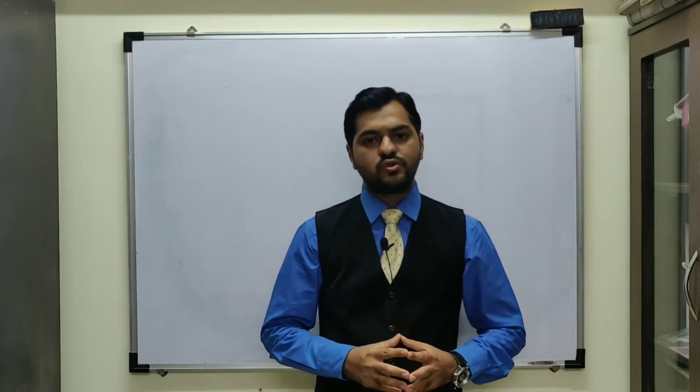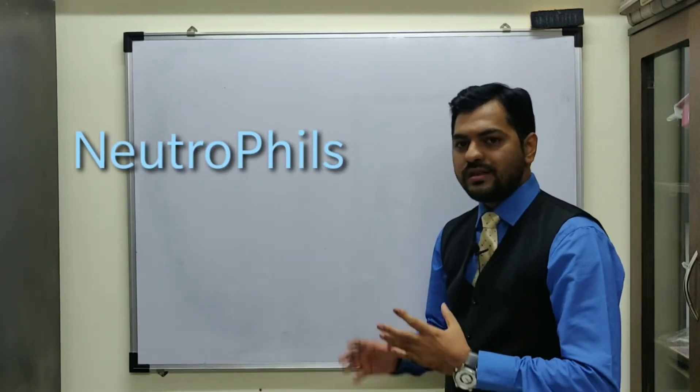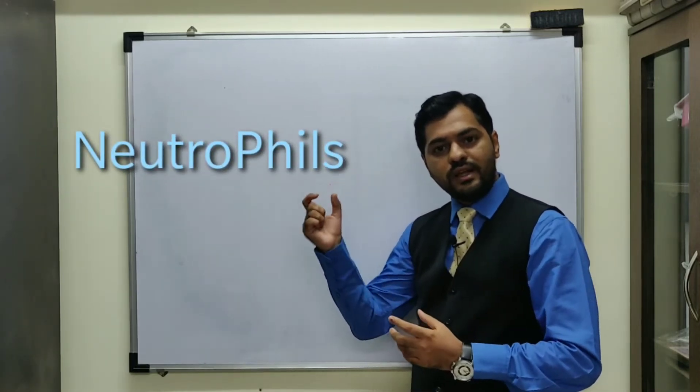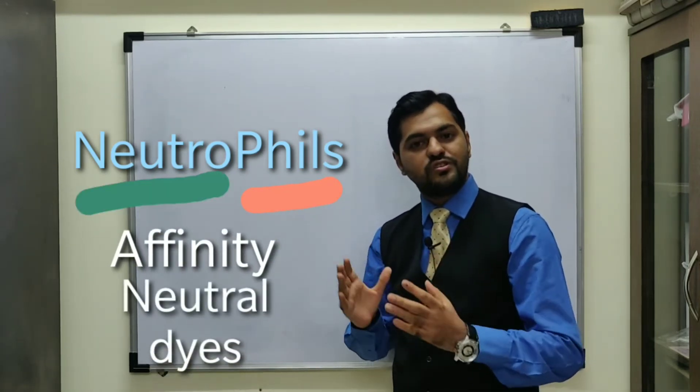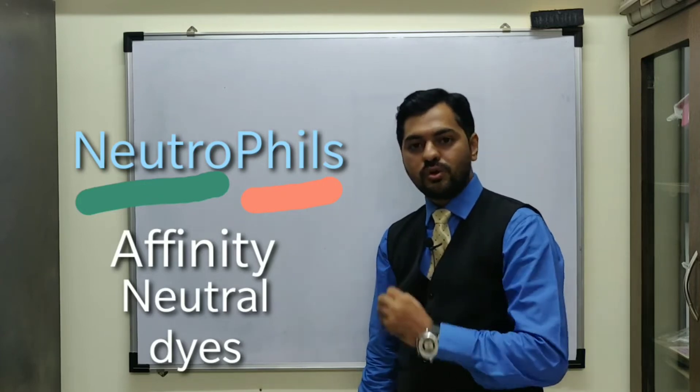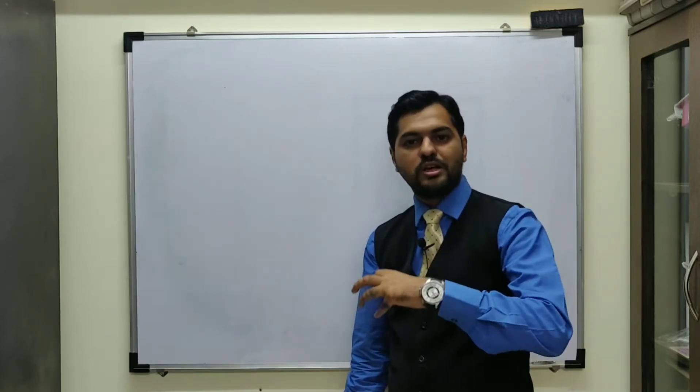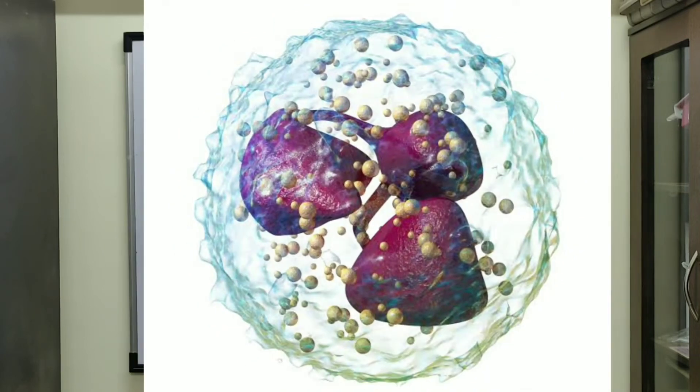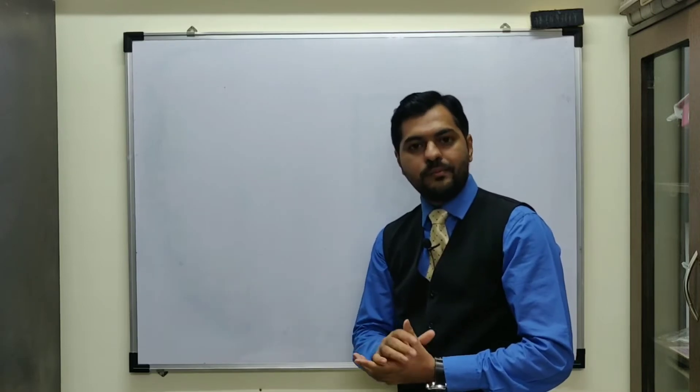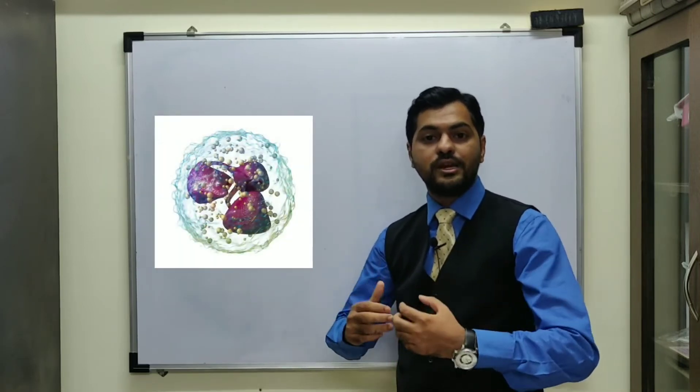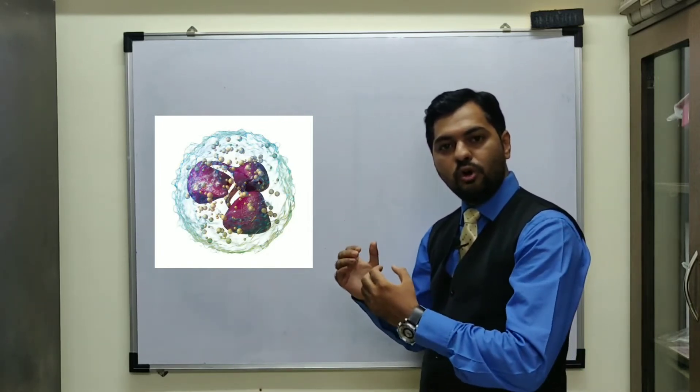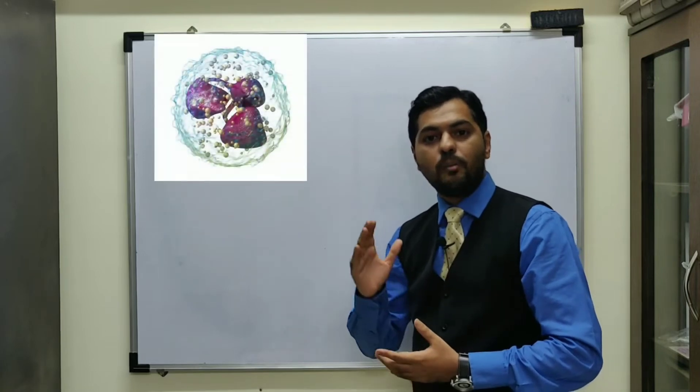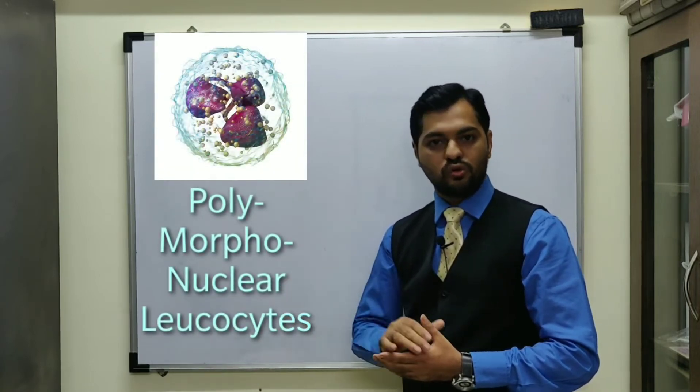Let us begin first with neutrophils. As the name suggests, phil means affinity and neutro means neutral dyes. So these neutrophils are stained by certain neutral dyes. They have a nucleus which has three to five lobes. Hence it is known as polymorphonuclear leukocyte.